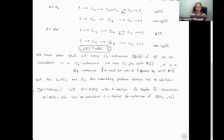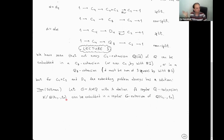The first one who noticed this was Saltman, and he proved this result: if you've got G which is a semi-direct product — so it's a split extension — A semi-direct Q, where A is abelian, then you can solve an embedding problem and lift any Q extension to a G extension. Or if you've got a regular extension with Galois group Q, it can always be embedded into a regular G extension over the same base.